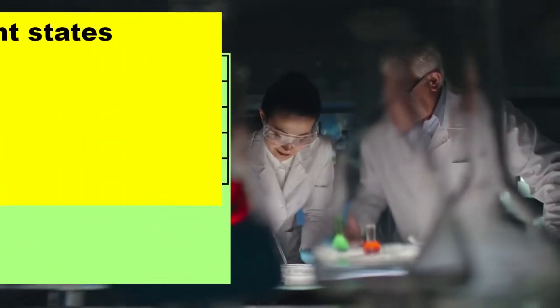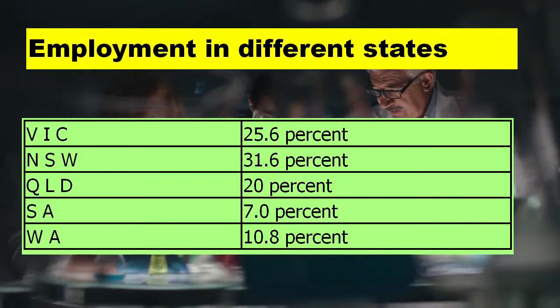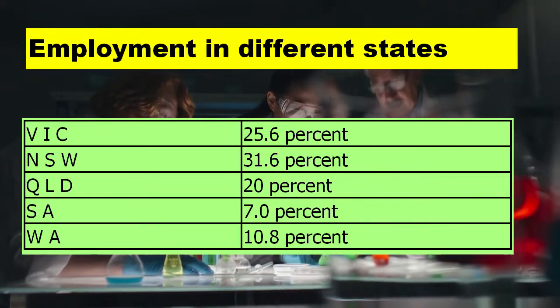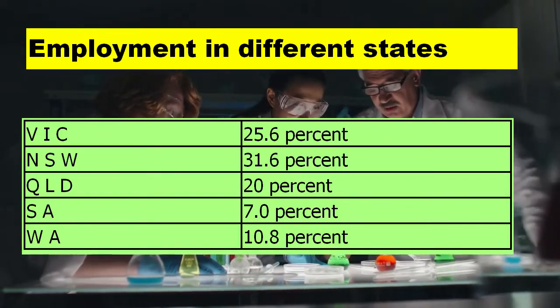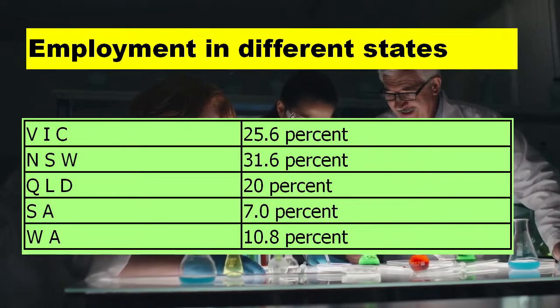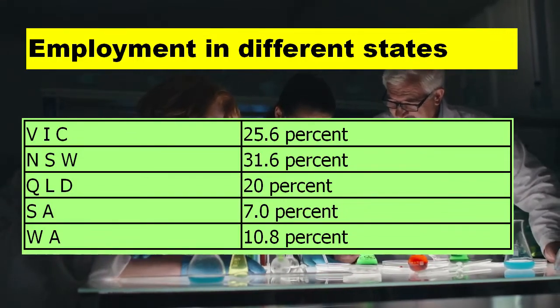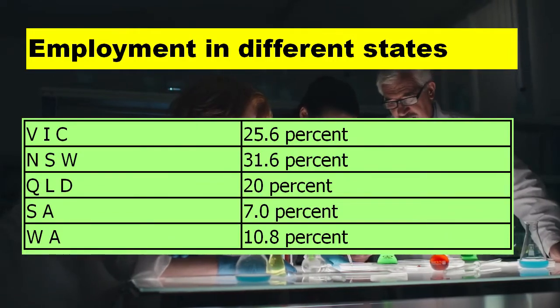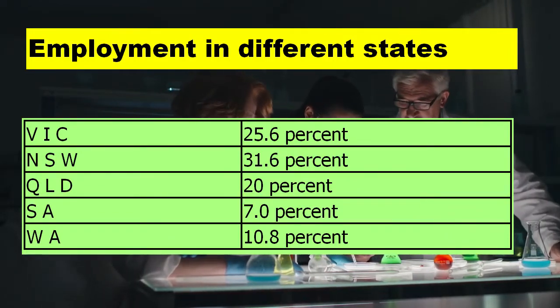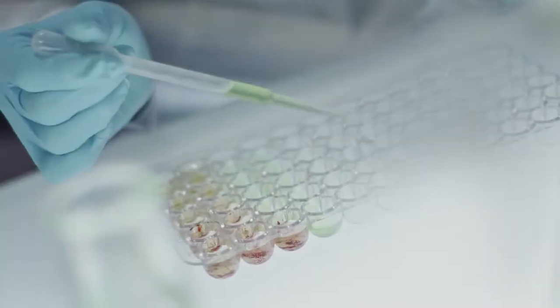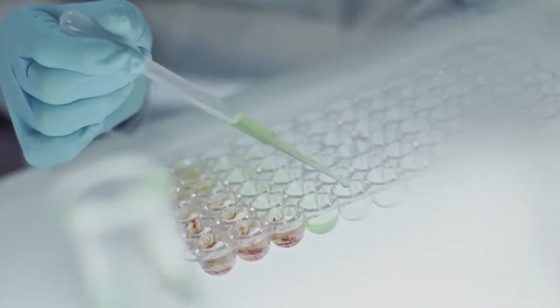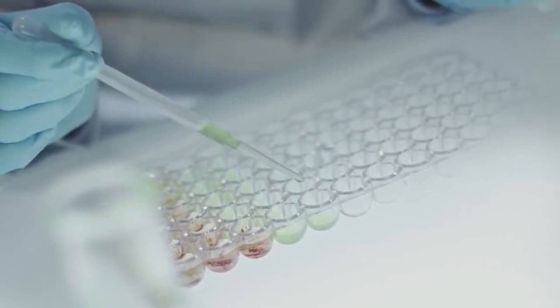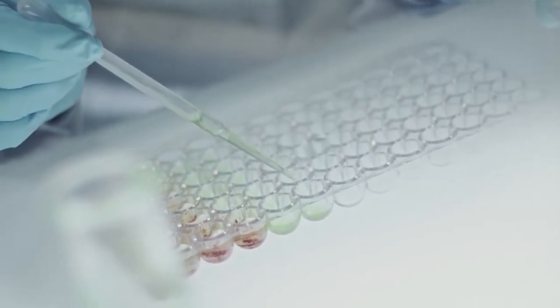In VIC, NSW and QLD majority of the biochemists are employed, which have 25.6%, 31.6% and 20.0% of biochemists employed respectively. The employment opportunities in SA and WA are 7.0 and 10.8% respectively for biochemists. Other states like TAS, NT and ACT have almost 2.0%, 1.0%, and 1.9% of biochemists respectively employed in Australia.